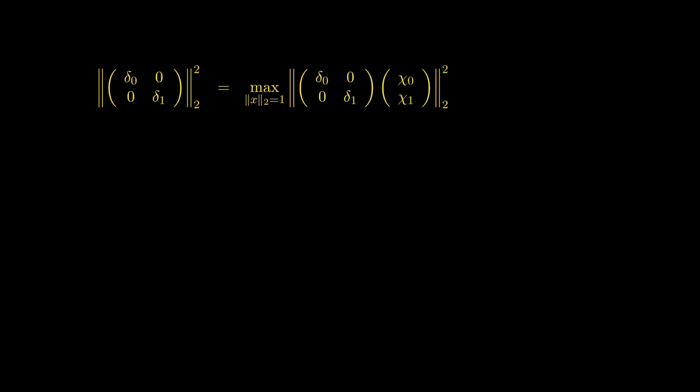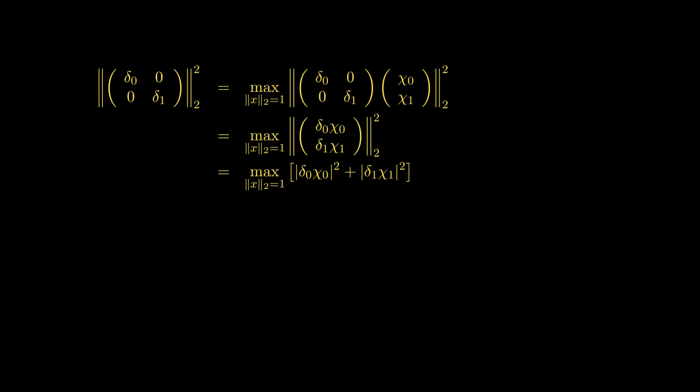We're going to square the 2-norm of the matrix because then we don't have to deal with the square root all the time. That's just equal to the max over all vectors with 2-norm equal to 1 of the 2-norm squared of the matrix times those vectors. We can multiply out the diagonal matrix times the vector, and then use the definition of the 2-norm to get the sum of the squares of the absolute values of the elements.